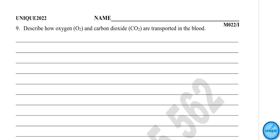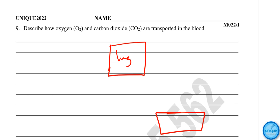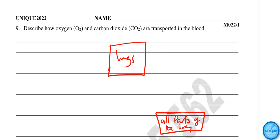The second experiment is to describe how oxygen and carbon dioxide are transported in the blood. We have the lungs here, and all parts of the body. Let's begin with what happens in the lungs.